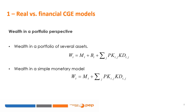In real life, total household wealth takes the form of a portfolio of several assets. In a closed economy, the stock of wealth is composed of the stock of money M, the stock of bonds issued by the government B, and the value of the physical stocks of capital in sector J. In an open economy, we also add net foreign assets, foreign currency, foreign bonds, etc. In our equation, MT is the stock of money, BT is the stock of bonds issued by the government, and KDJ is the stock of physical capital in sector J.